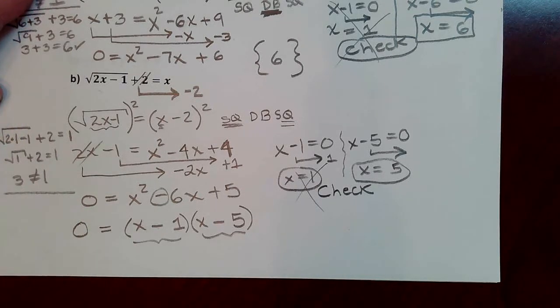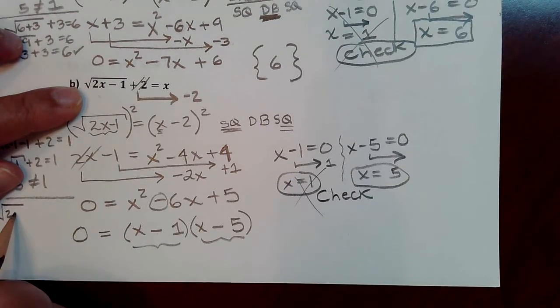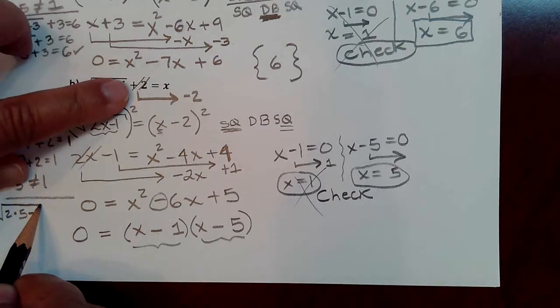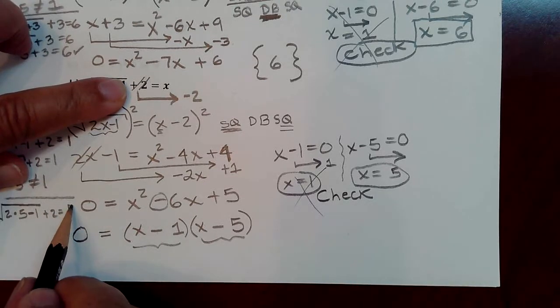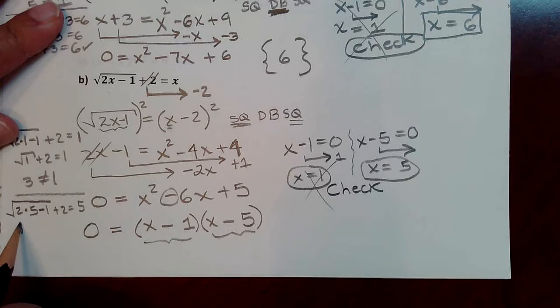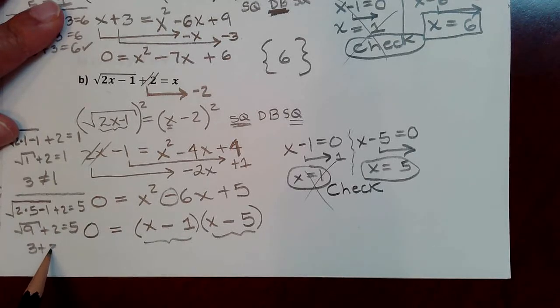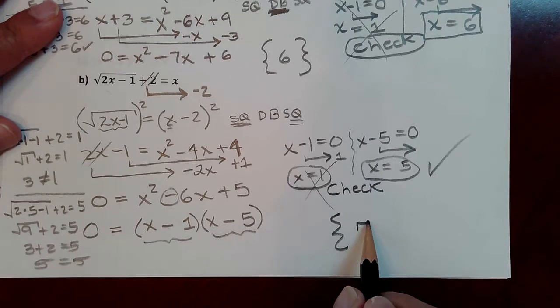My equation is 2 times the solution I'm checking minus 1. All of that's underneath the square root. Plus that additional 2 is equal to the answer that I'm trying to check. So let's see what we got here. 2 times 5 is 10. 10 minus 1 is 9. Bring down the positive 2 and the 5. So this will be square root of 9 is 3. 3 plus 2. That one works out because we get the same number on both sides. So that works out. The answer is just the 5.